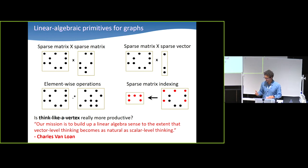So I like this quote by one of the founders of numerical linear algebra, Charlie Van Loan. He basically said at some point, our mission is to build a linear algebra sense to the extent that vector-level thinking becomes as natural as scalar-level thinking. Most researchers in this field know that. They don't think about scalars and elements in matrices. They do think about blocks or columns. In general, the higher level you can think, the more productive it gets. And we would like to do the same for graphs, and that's the whole argument behind matrices.